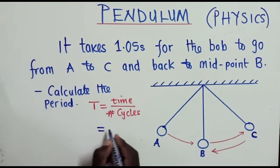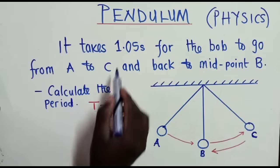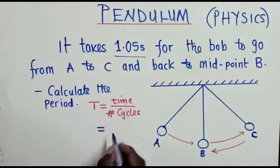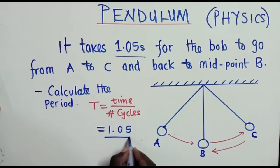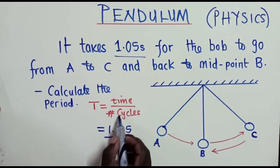So now, after writing this formula, you say equal to what is our time? The time we've been given is right here. This is 1.05 seconds over number of cycles.